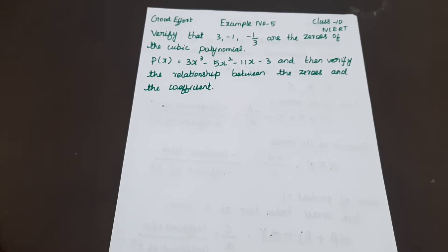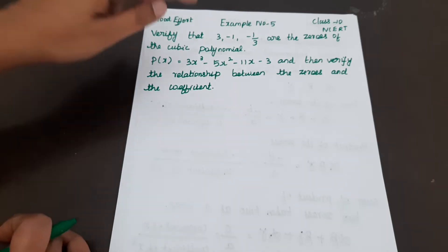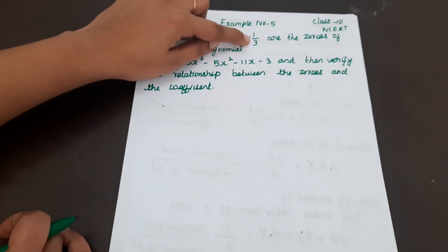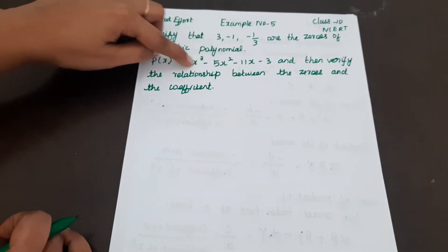So the zeros of the cubic polynomial are 3, minus 1, and minus 1 by 3. We need to verify that each of these is indeed a zero of the cubic polynomial P(x).